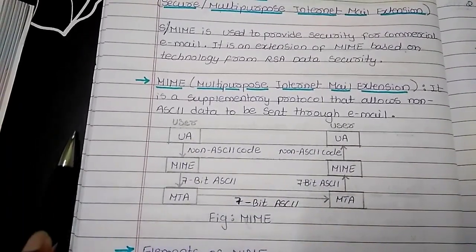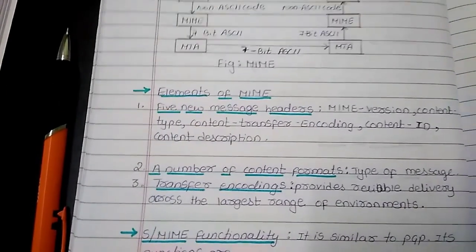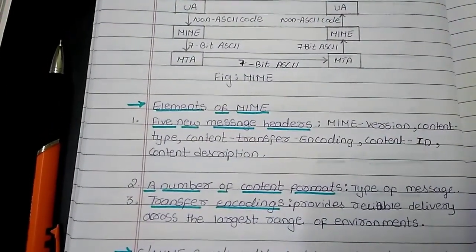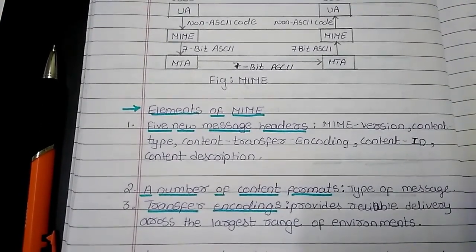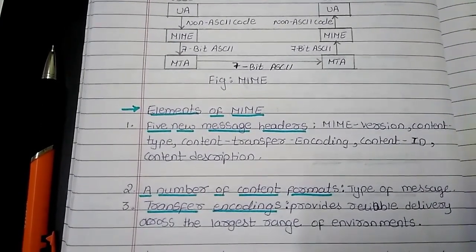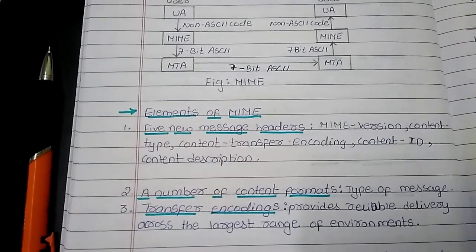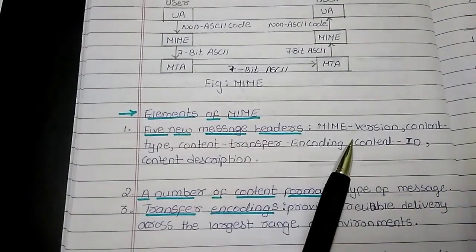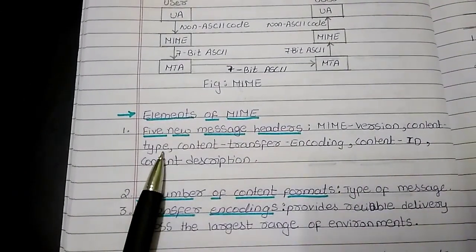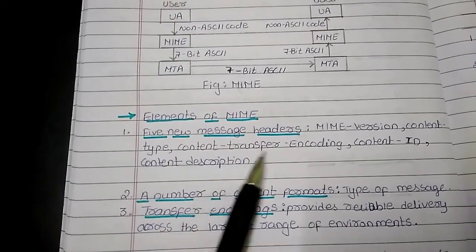If we see the elements of MIME, there are a few elements. We have 5 new message headers. These message headers are transformation parameters which include MIME version, content type (which can be audio, video, text, anything), content transfer encoding, content ID, and content description.